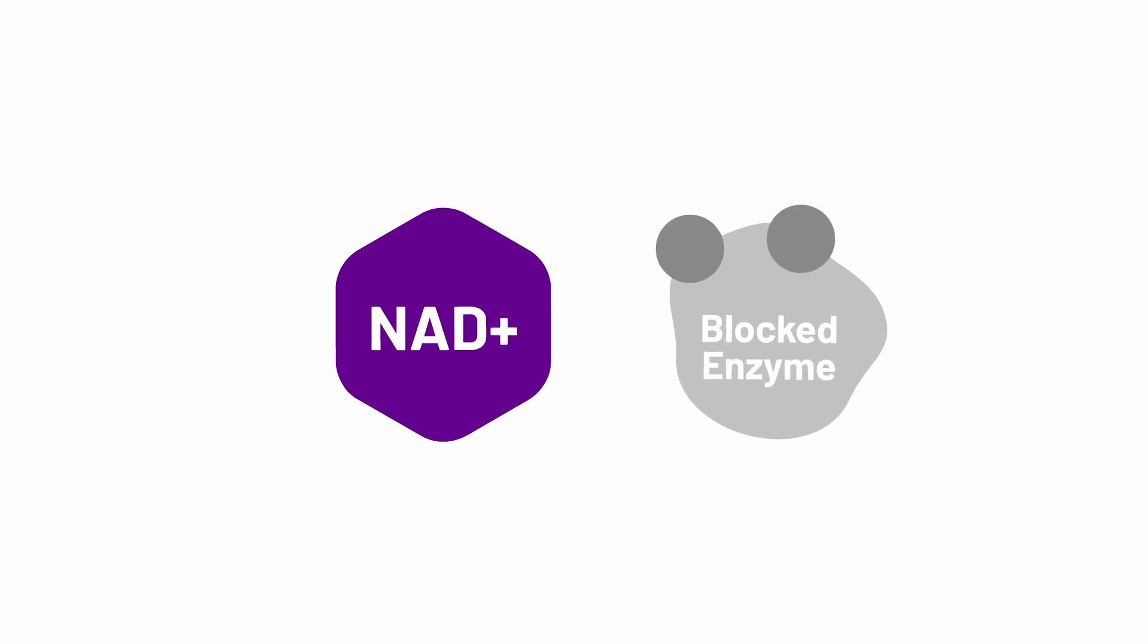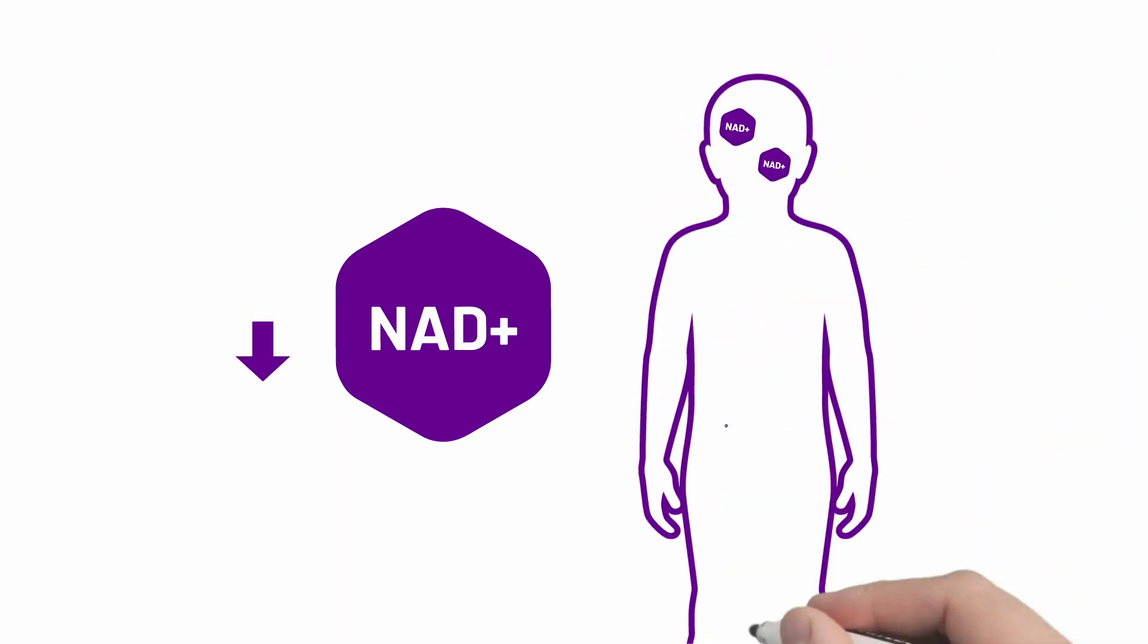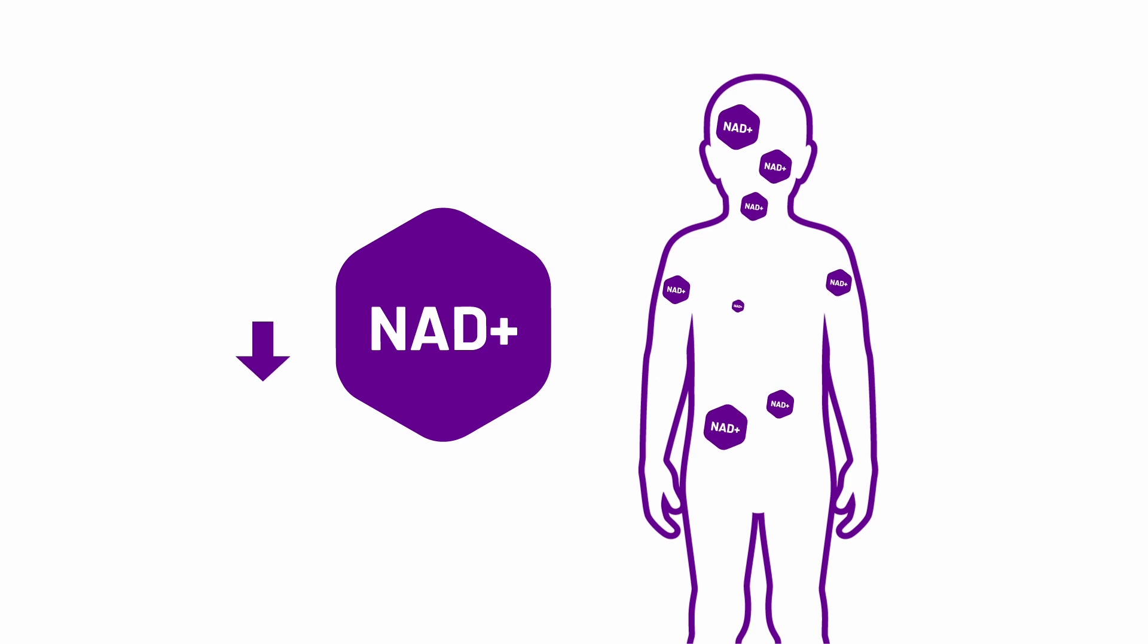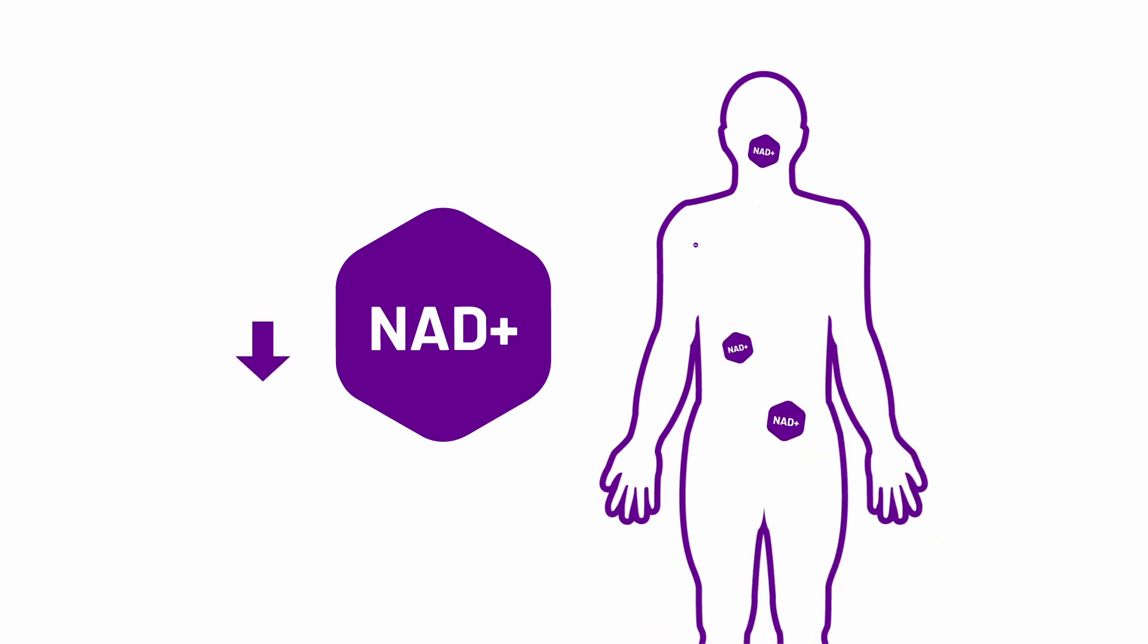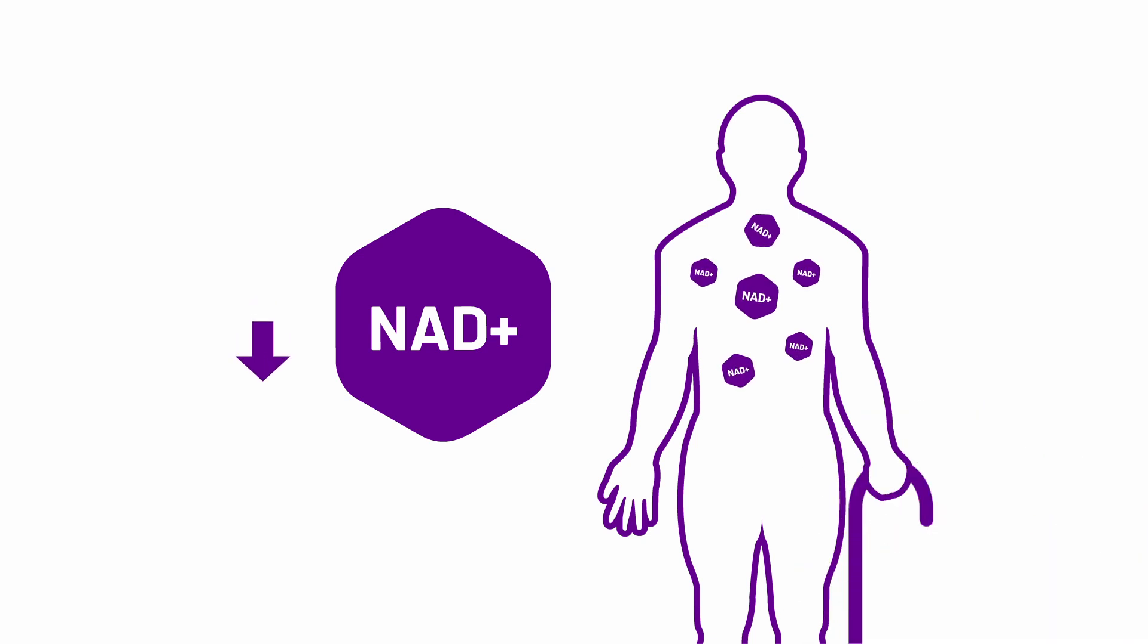Researchers have seen that with lower NAD+ levels, the enzymes either work inefficiently or not at all. Unfortunately, like many other key molecules in the body, NAD+ levels also decline with age. The decline in NAD+ levels is seen alongside a loss in the function of our cells. This means that their ability to make cell energy becomes less effective, while their ability to protect against cell damage goes down.